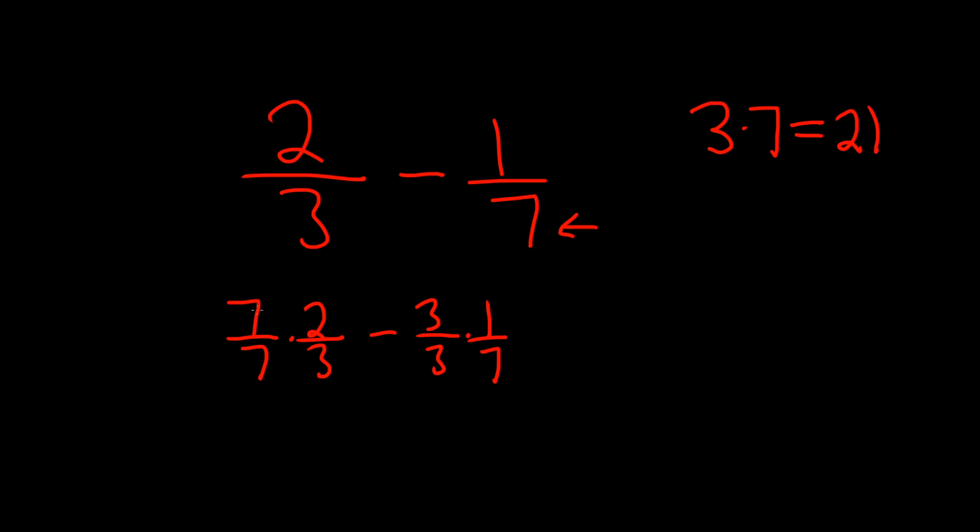So now you multiply straight across. 7 times 2 is 14, 7 times 3 is 21. Minus, 3 times 1 is 3, 3 times 7 is 21. Good stuff.